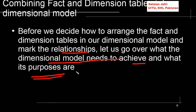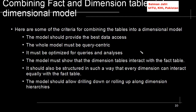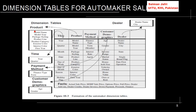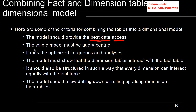So how should the dimensional model be? Here are some of the criteria for combining tables into a dimensional model. The model should provide the best data access, because when accessing the data we would have joins between the fact table and the different dimension tables. The whole model must be query-centric — it should be more focused towards the queries that would be posed by the customers. Remember we discussed that in a data warehouse the queries are ad hoc, on the fly, and the model must be optimized for queries and analysis.